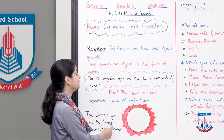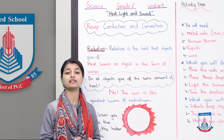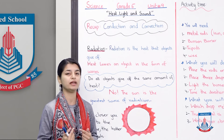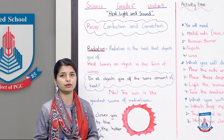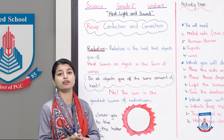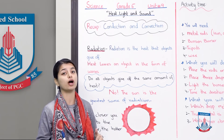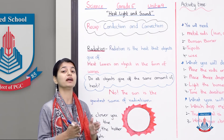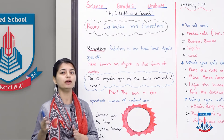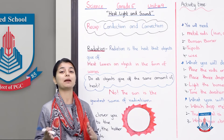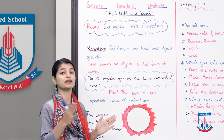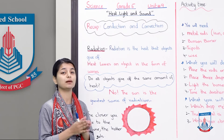The closer you are to the source, the hotter it gets. Obviously, the closer you are to a fire or any heat source, the more heat you will feel, and the further you go, the less you will feel. If you are very close, it might even burn your hand. But if you hold your hand from a distance with a fire burning, the further you are, the less radiation will affect you. That means distance is very important — since radiation travels directly from the source to another object, the distance between them matters a lot.